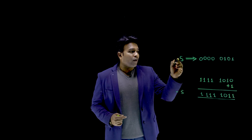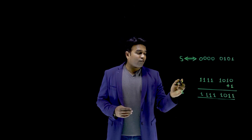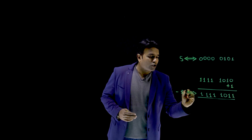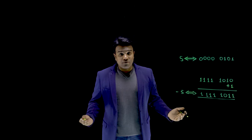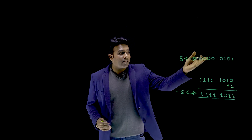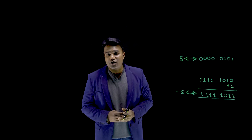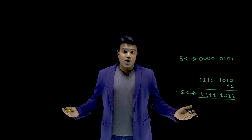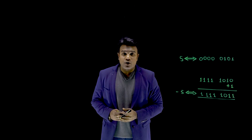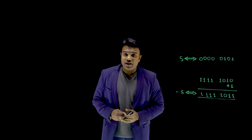5 within the memory is stored like this, and minus 5 within the memory is stored like this. If you don't believe it, you can add the representation of 5 and the representation of minus 5, and you would notice that you get the result as 0. That proves that this is minus 5.